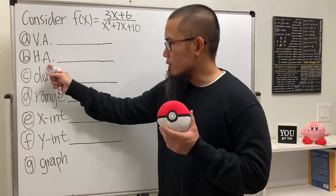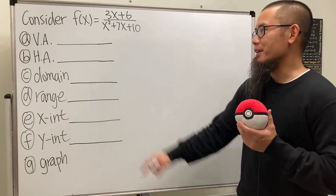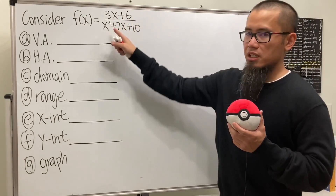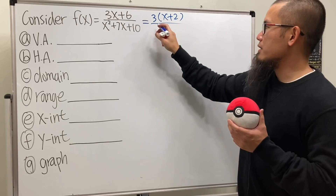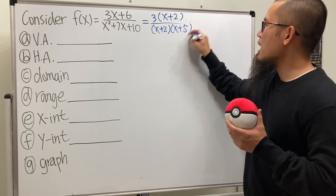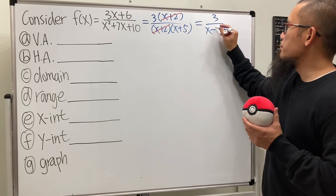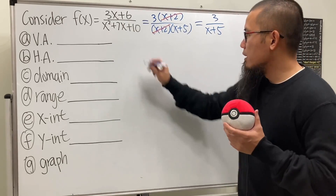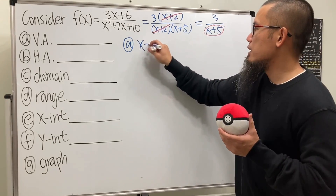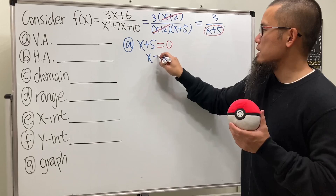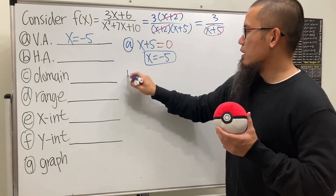Now we investigate a second rational function, finding the vertical asymptote, horizontal asymptote, domain, range, x-intercept, y-intercept, and a sketch of the graph. First, check if we can reduce: on the top we can factor out a 3, and the bottom factors as (x + 2)(x + 5). We can cancel the (x + 2) factors, so the reduced form is 3 over (x + 5). For the vertical asymptote, set x + 5 equal to zero: x equals negative 5.